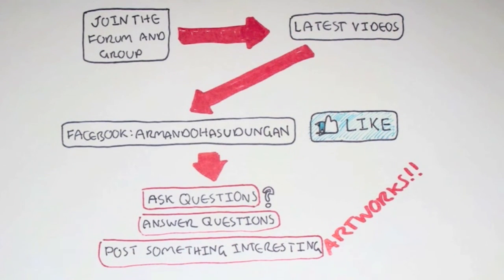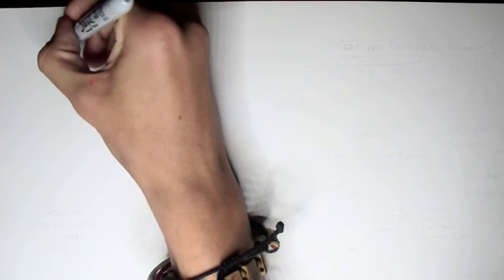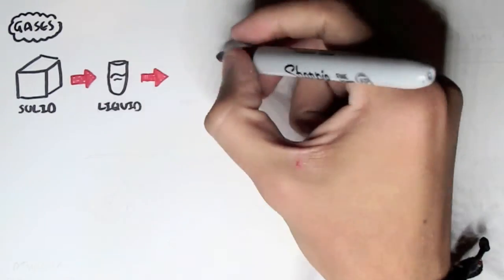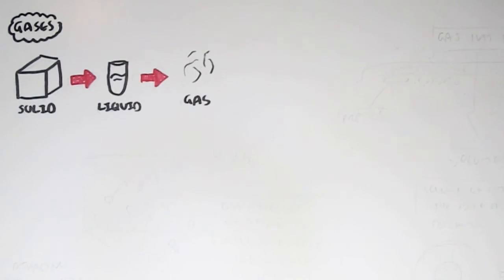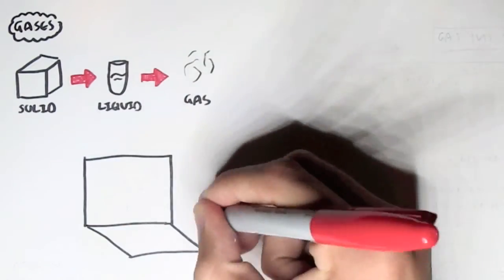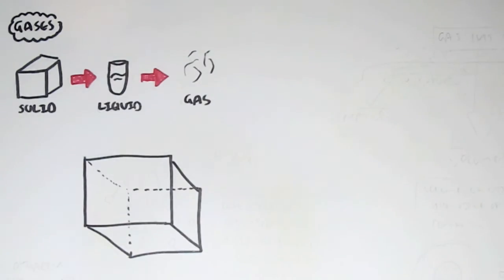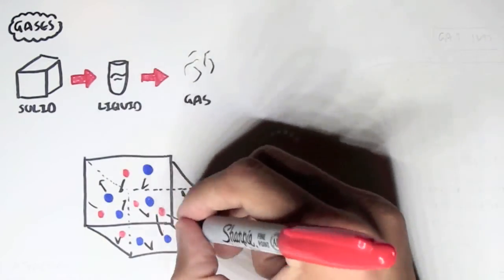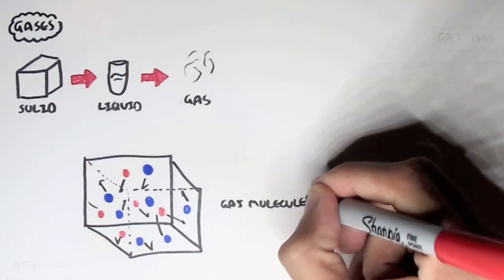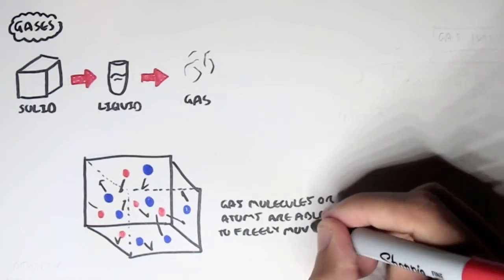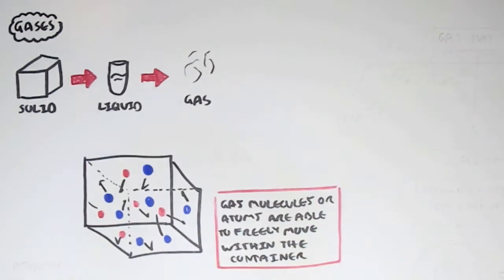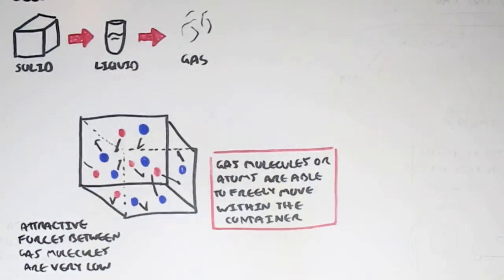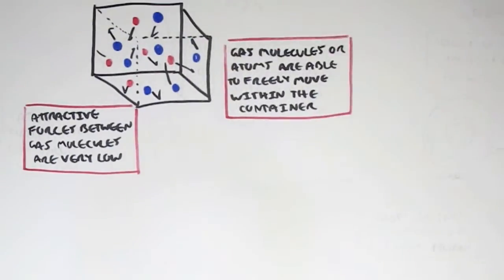We begin with the states of matter, and where is gas here? Solid can go to liquid, and then liquid, if we boil it up, can produce gas — such as if we are boiling water, gas comes out. So let's say we have a container here, a square, filled with gas particles. We have two types of gas particles and they're all moving around. Gas molecules or atoms are able to freely move within a container, and the attractive forces between gas molecules are very low, so they don't really have any attractions between each other.